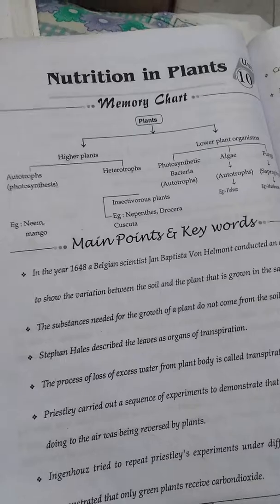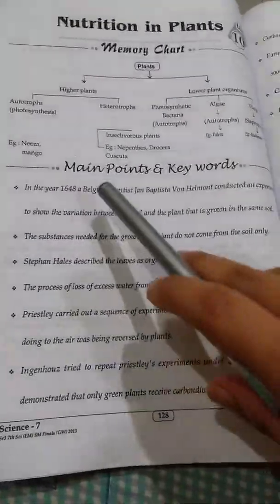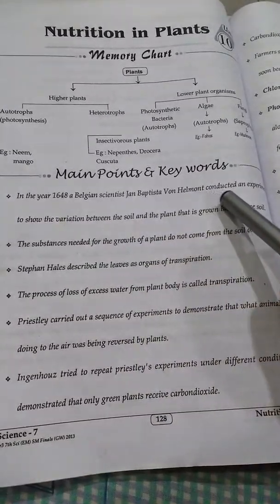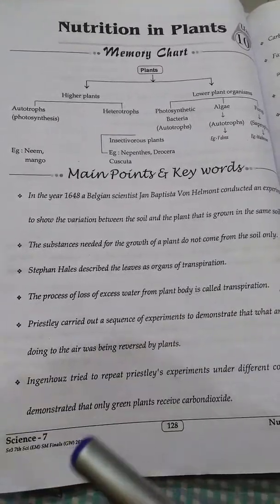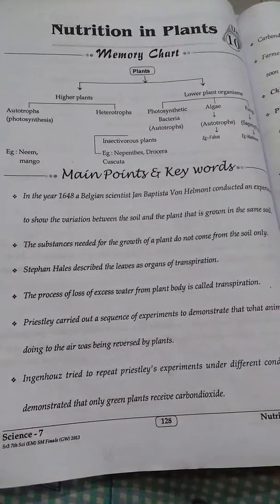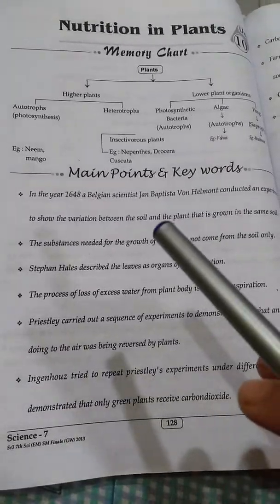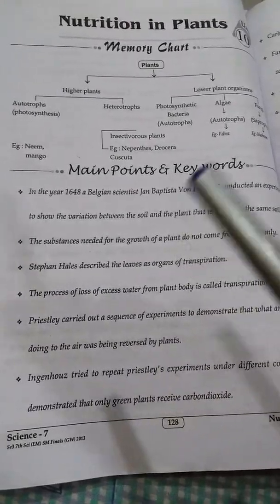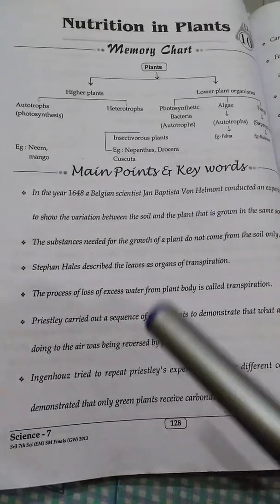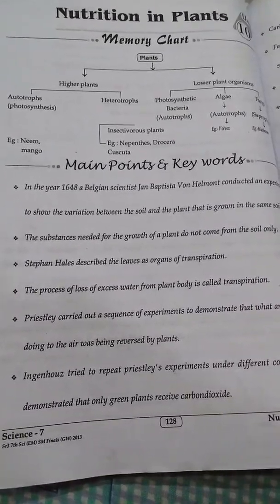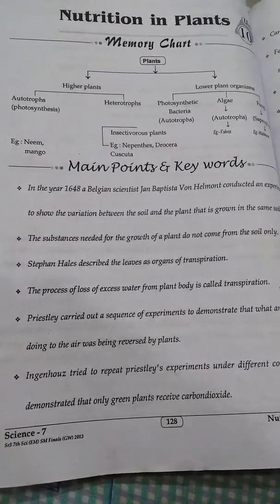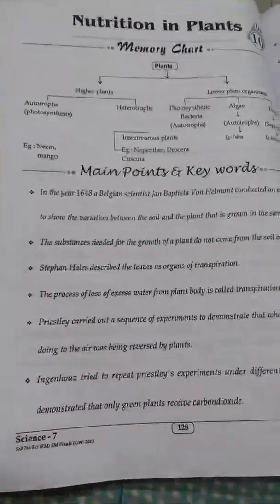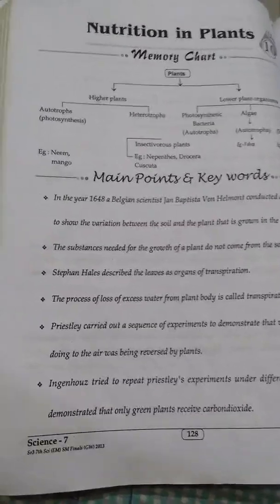In the year 1648, a Belgian scientist Jan Baptist van Helmont conducted an experiment to show the variation between the soil and a plant growing in the same soil. He demonstrated that the substances needed for the growth of a plant do not come from the soil only.